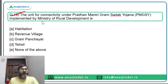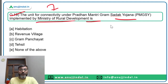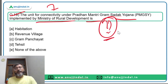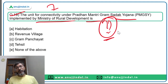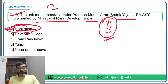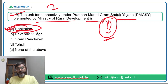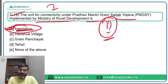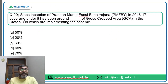Question nineteen: what is the unit of connectivity under Pradhan Mantri Gram Sadak Yojana implemented by the Ministry of Rural Development? Under PMGSY, the unit used to measure road connectivity is 'habitation' — meaning in those villages where the government targets to construct roads, the habitation must be connected. The unit for connectivity under PMGSY is habitation.